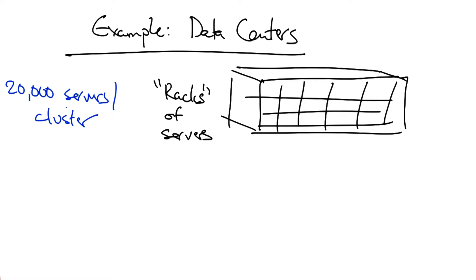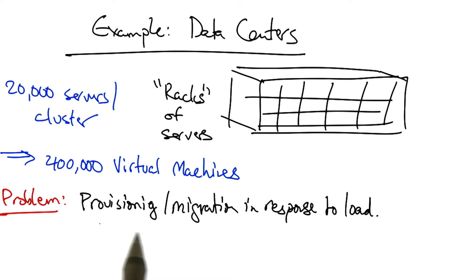Assuming that each one of these servers can run about 200 virtual machines, that's 400,000 virtual machines in a cluster. A significant problem is provisioning or migrating these virtual machines in response to varying traffic loads.